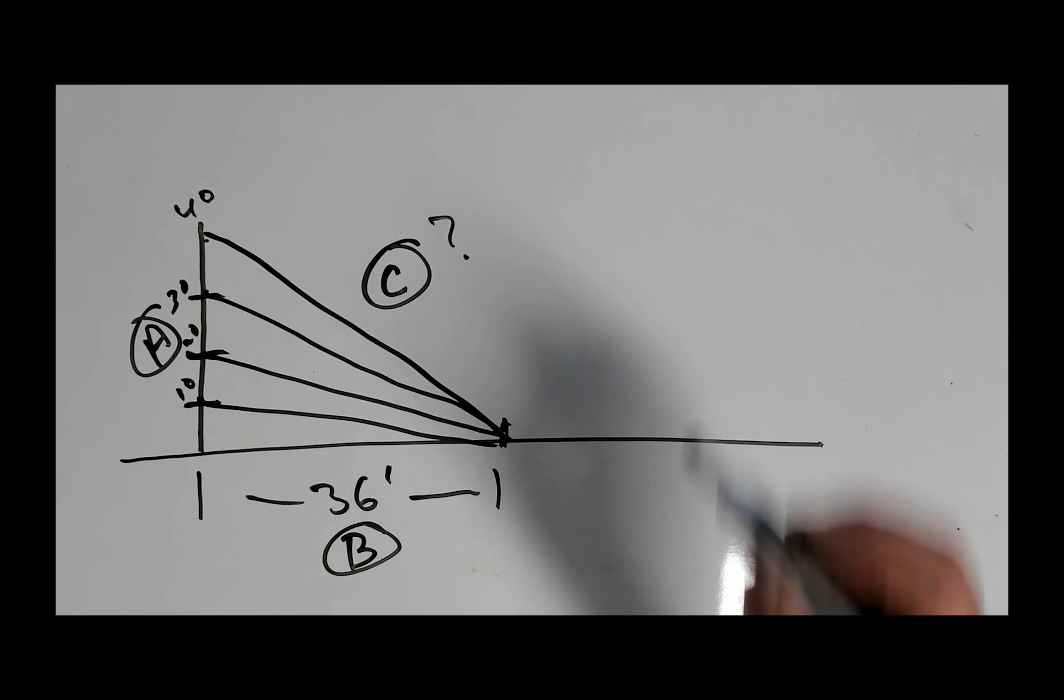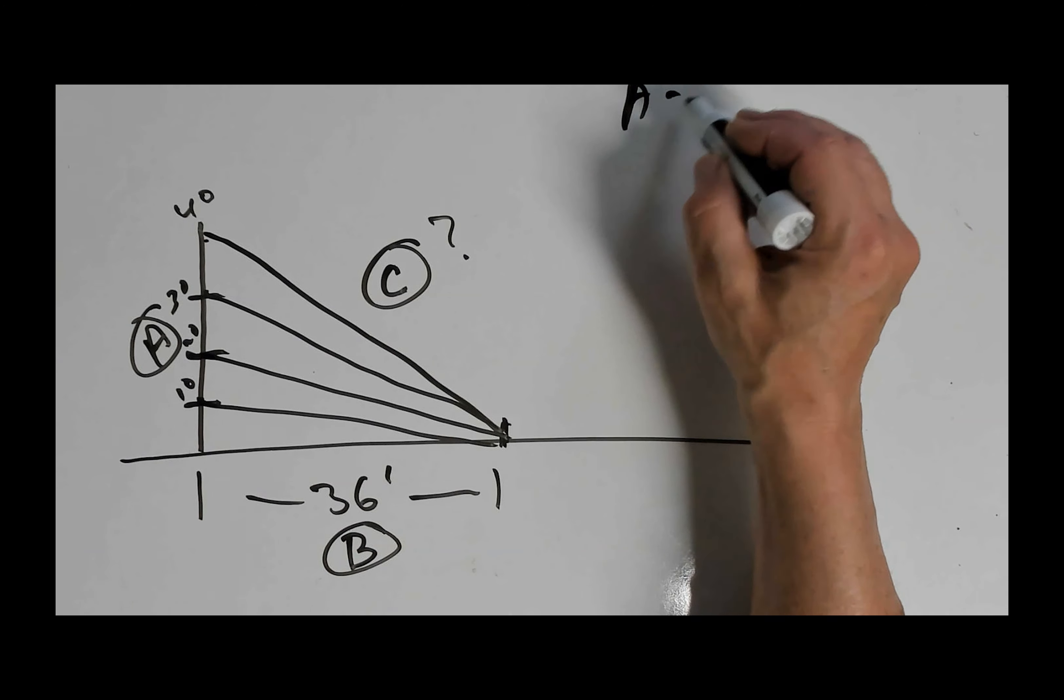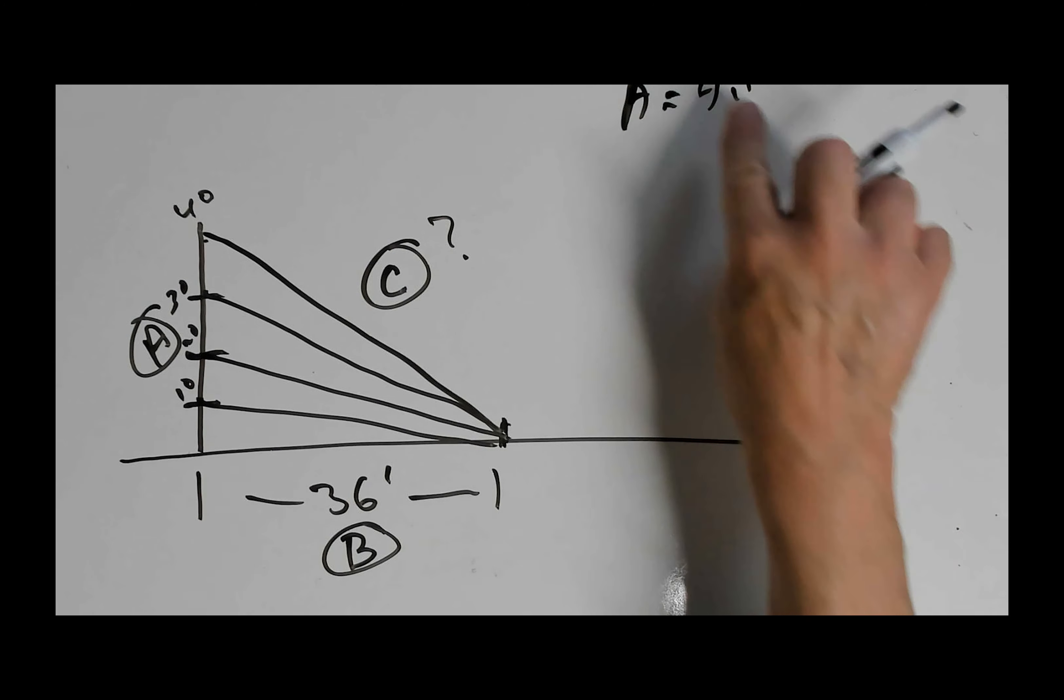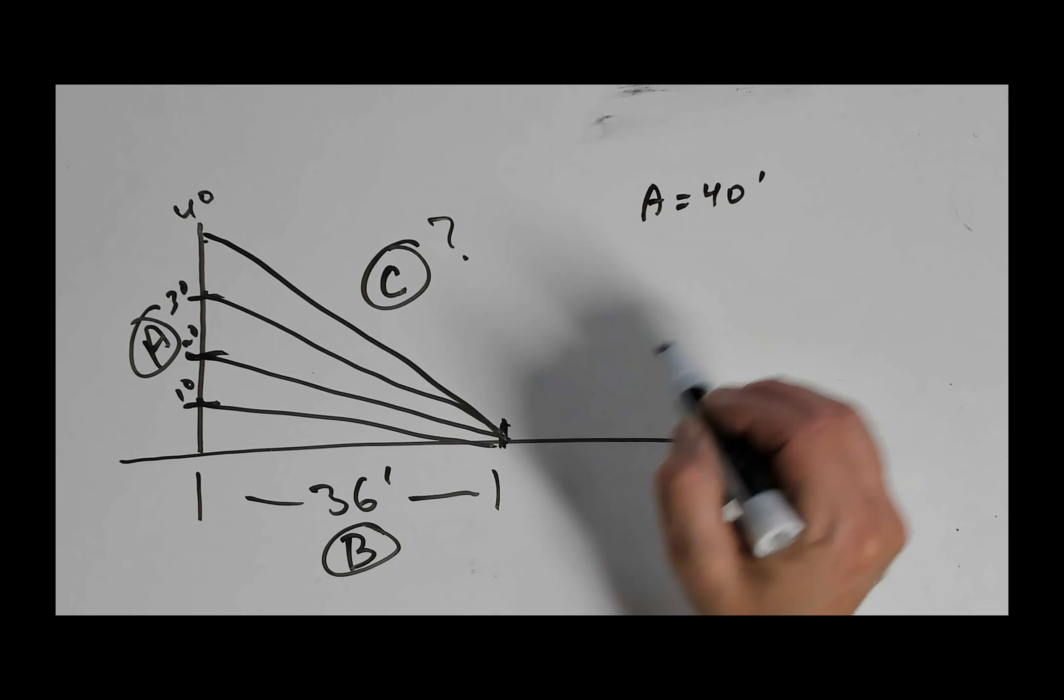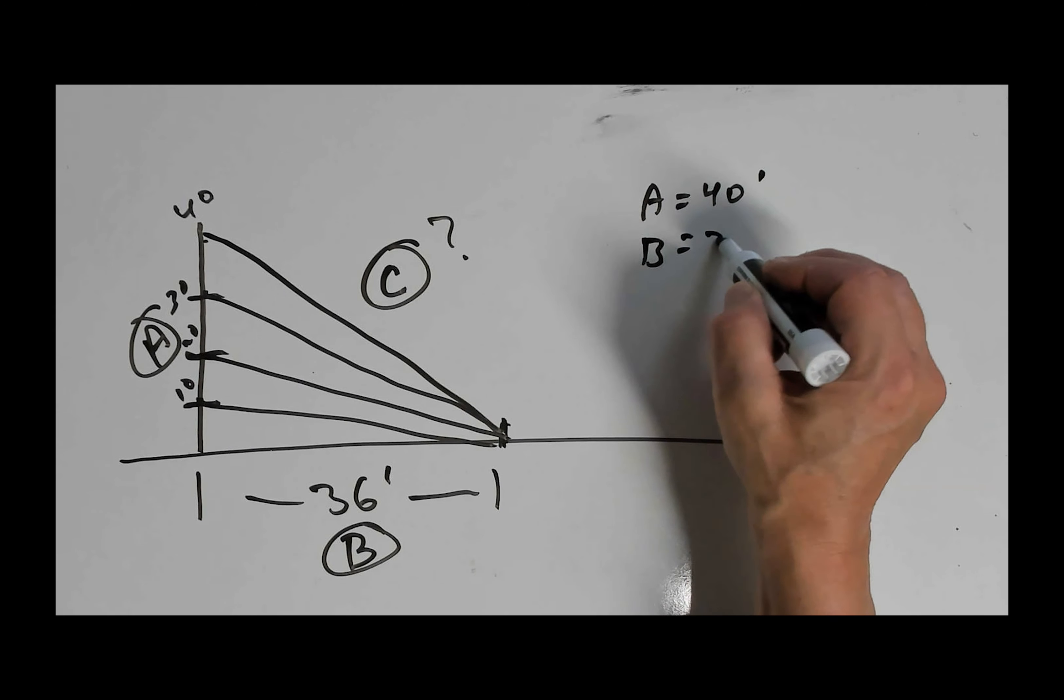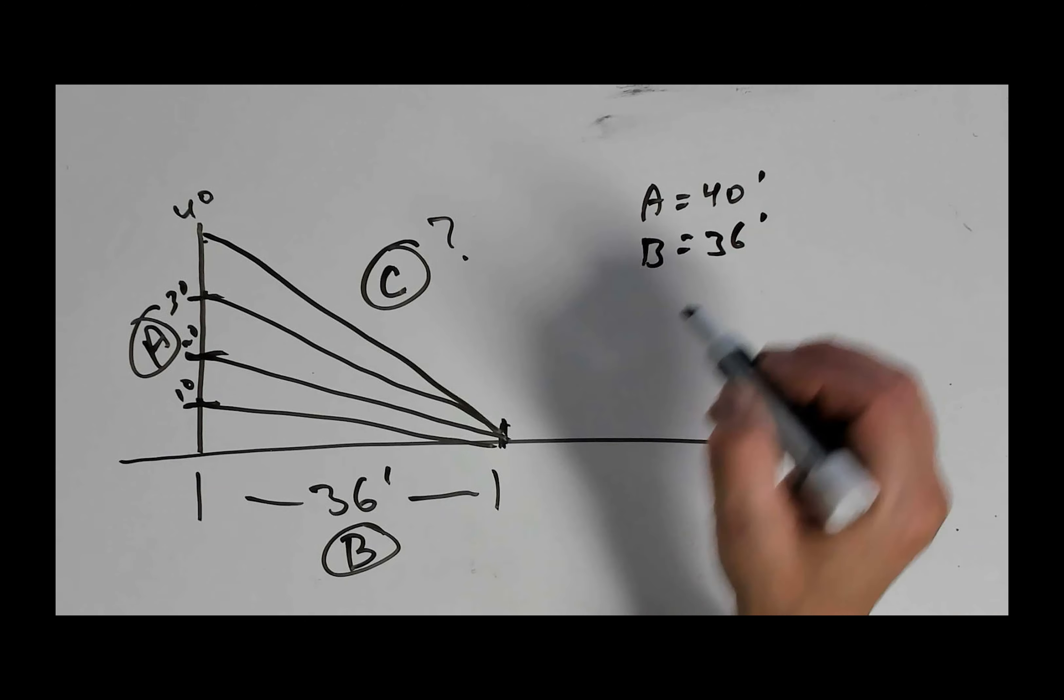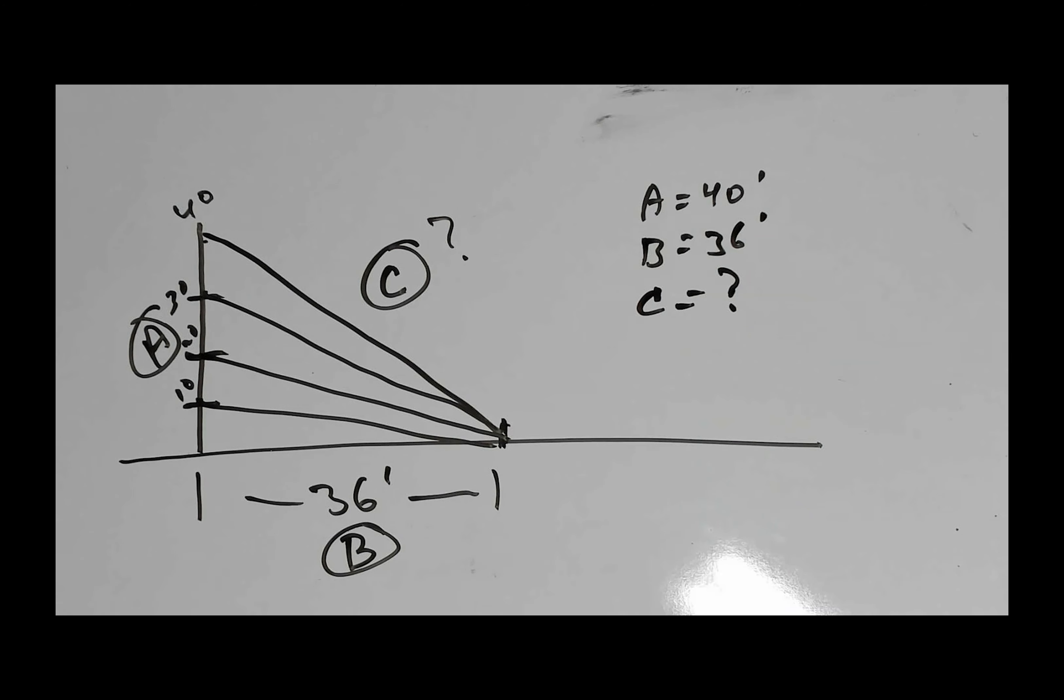All right, so we have our variables. We have our A, which is the mast, which is 40 foot. A equals 40 foot. B, our distance, is 36 foot. And C is our unknown variable. Let's go ahead and work this problem out.